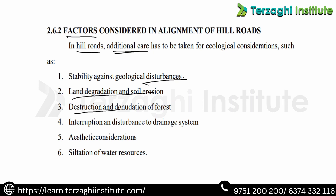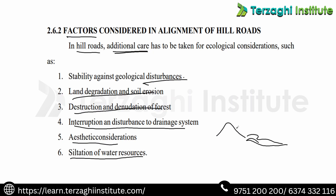These problems include destruction of forests. In the area of a forest, trees are affected, and wildlife is also disturbed. So we need to protect the safety of the forest. Next, interruption and disturbance to the drainage system — proper subsurface and surface drainage must be provided in hill roads. The third consideration is the filtration of water resources. We must protect water resources in the area.